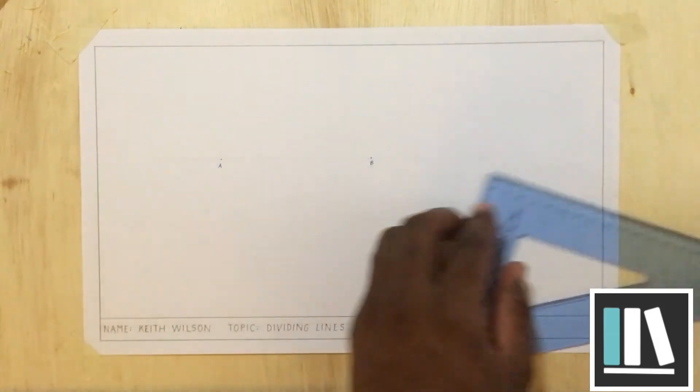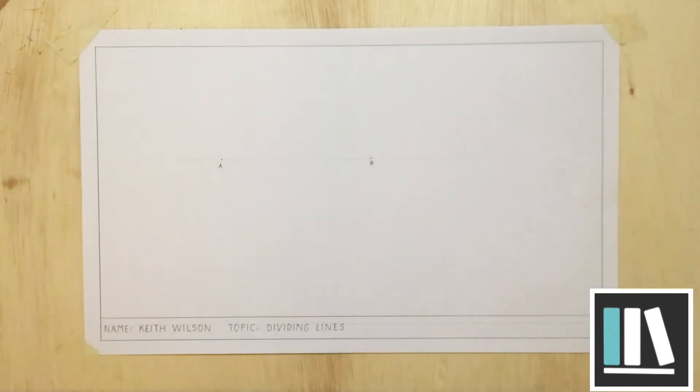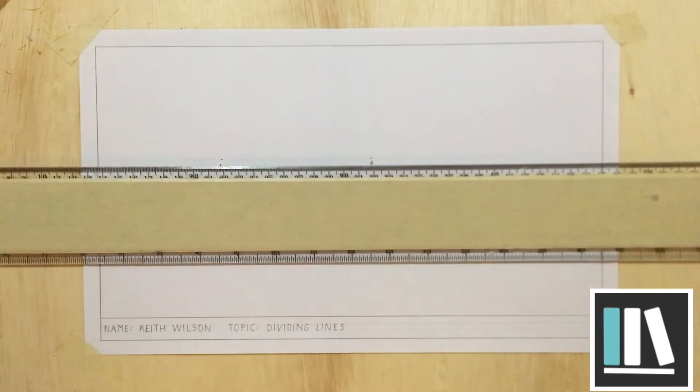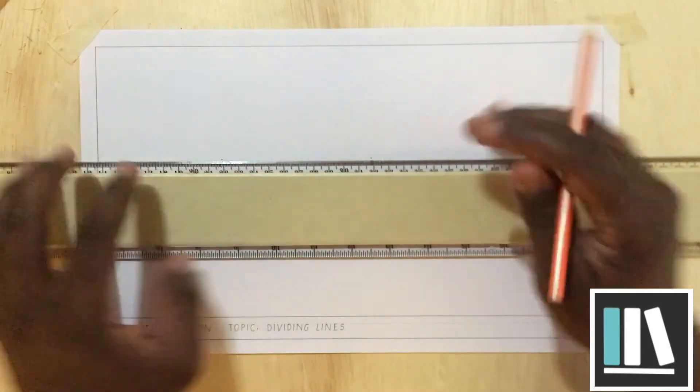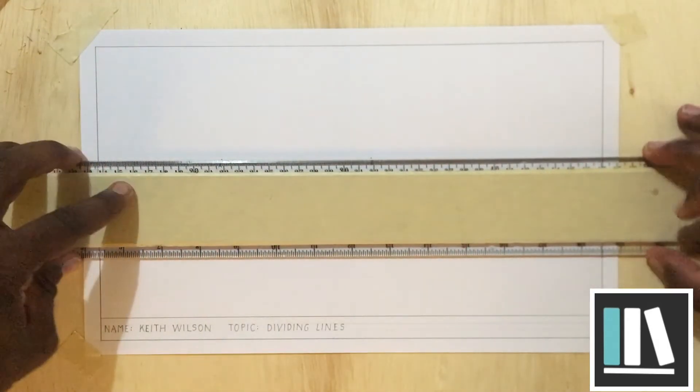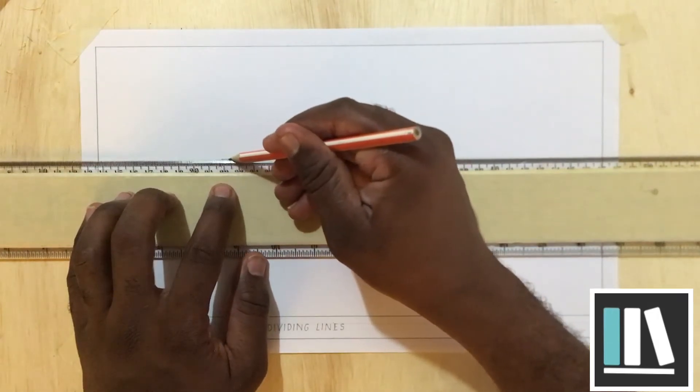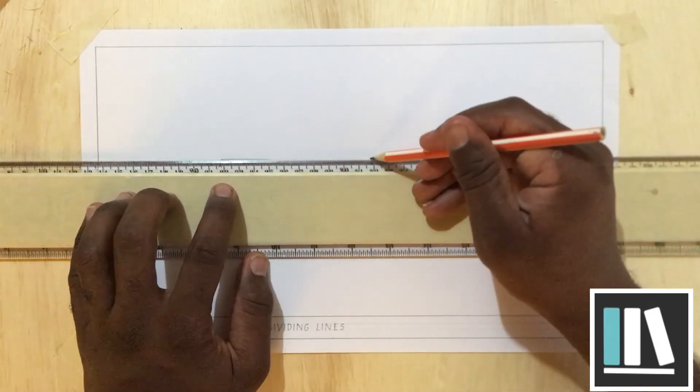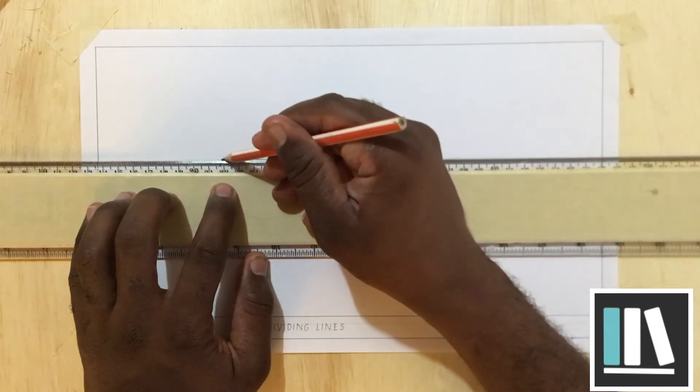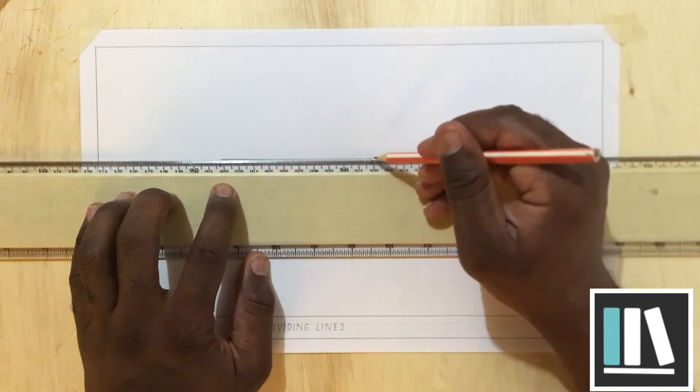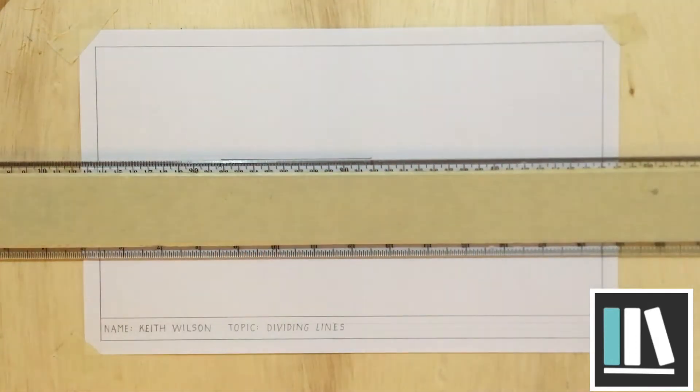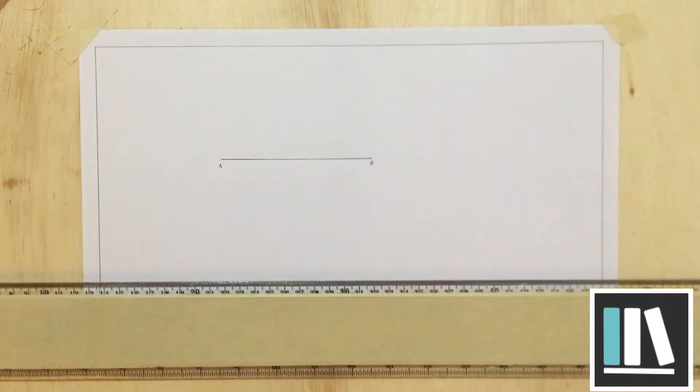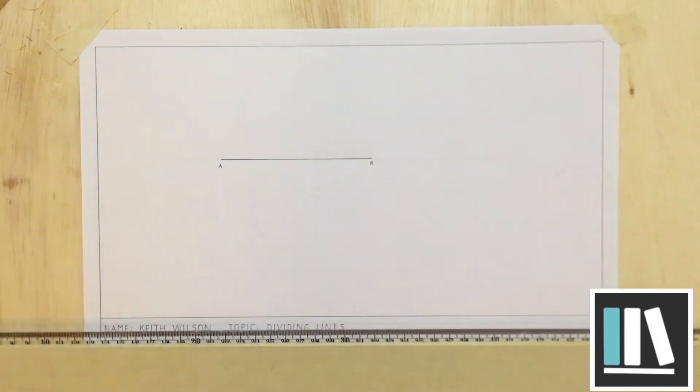The next step in this line drawing exercise will be to use an outline to connect points A and B. In other words, you are going to brighten the line from A to B. Please ensure that you don't brighten beyond the dots. The dots represent the starting point and the end point of the line. Now you have your line, which is 100 millimeters.